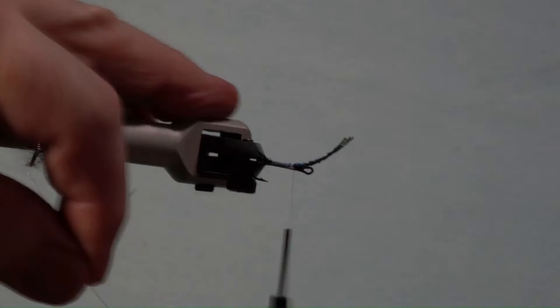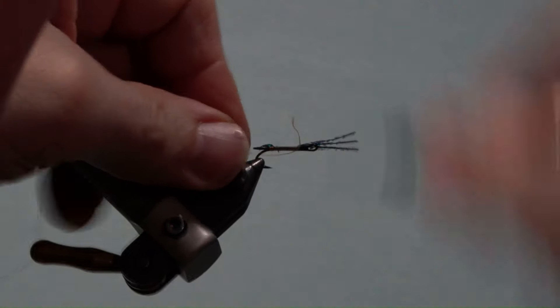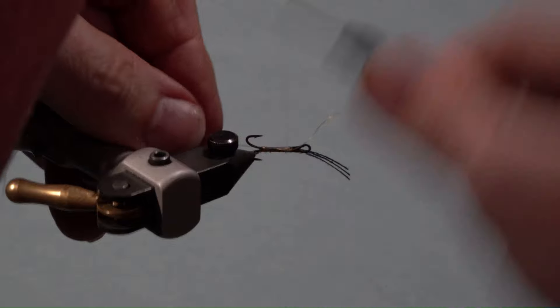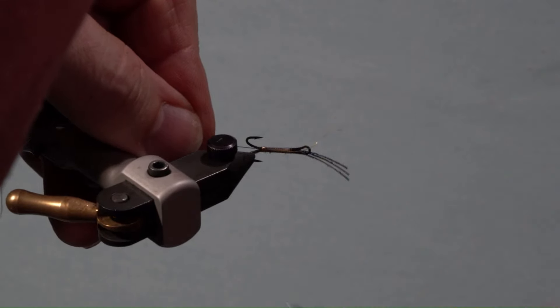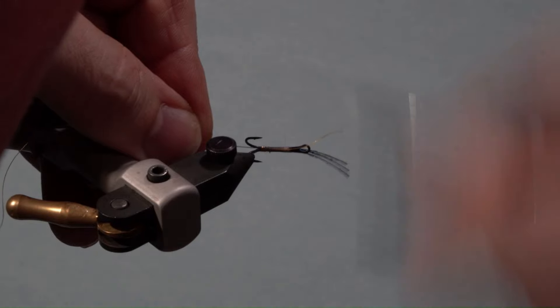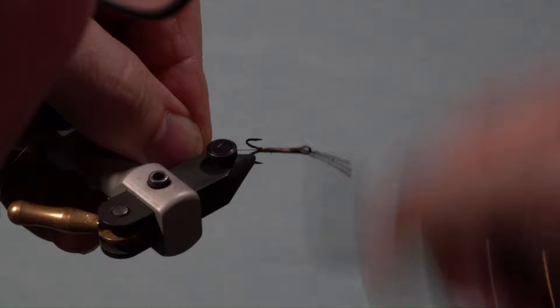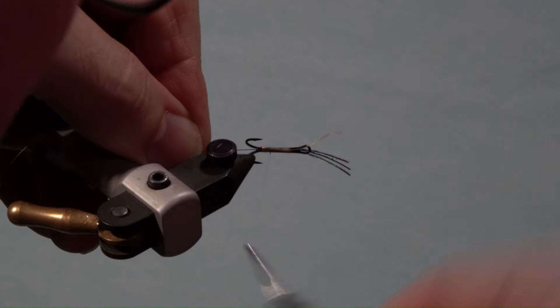Next, take a fine oval gold tinsel, strip a small section of the tinsel down to the core and secure it underneath the hook. Place it so the tinsel portion is lined up with the tag. Wrap edge-to-edge nice and even. This will give you a nice smooth underbody for the silk floss.